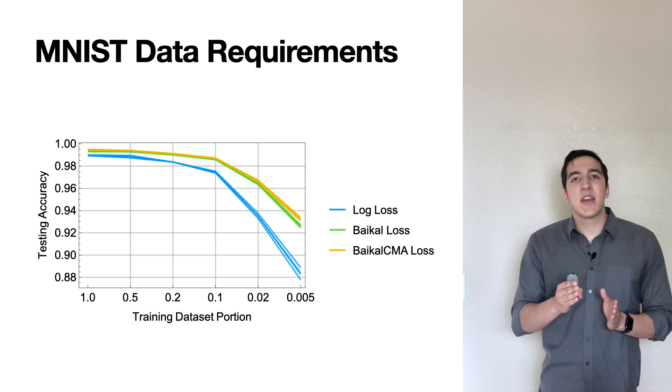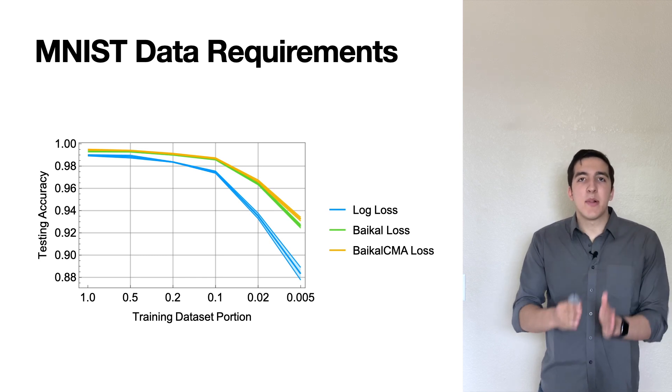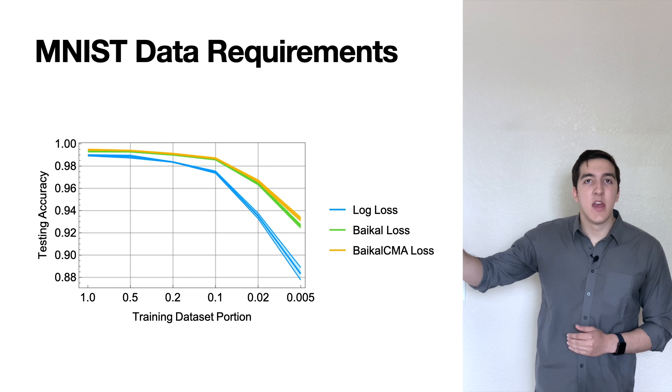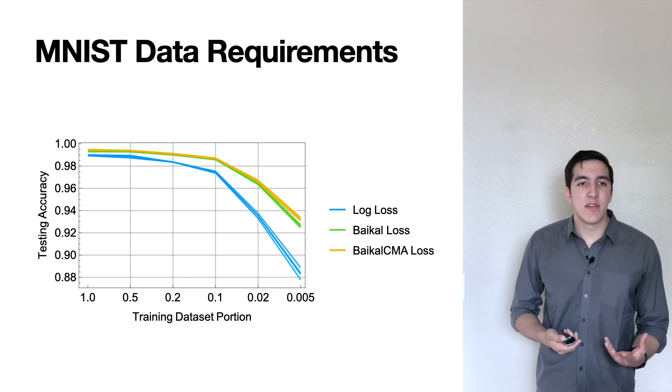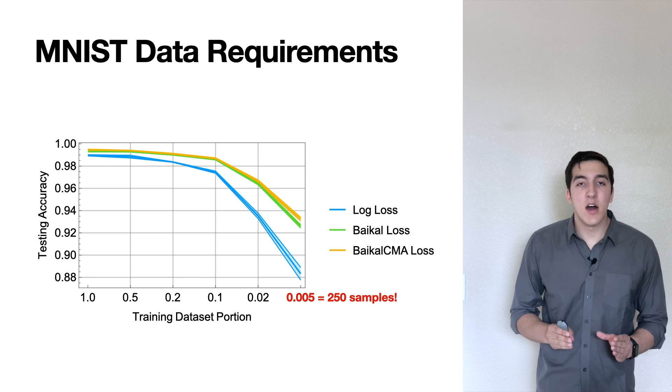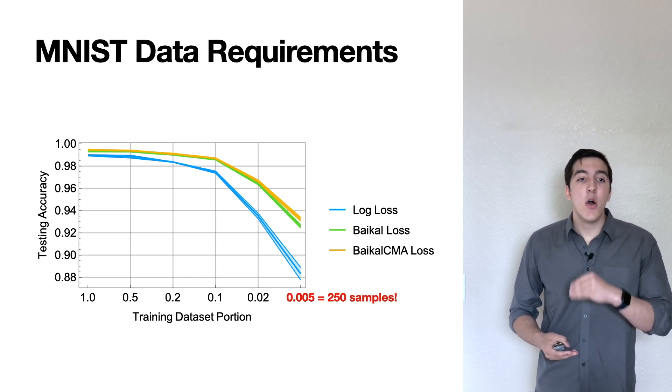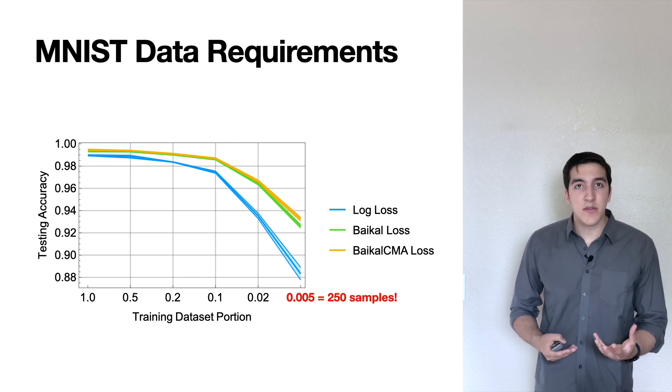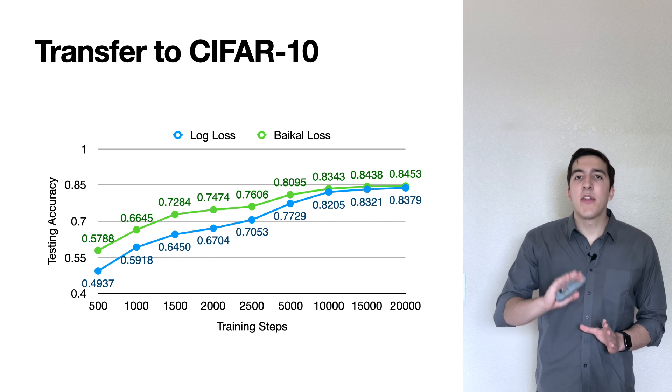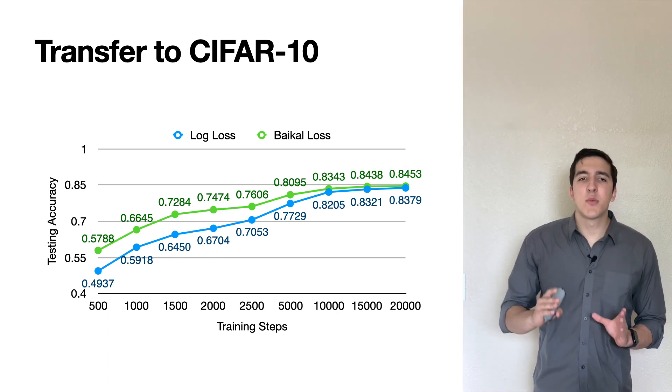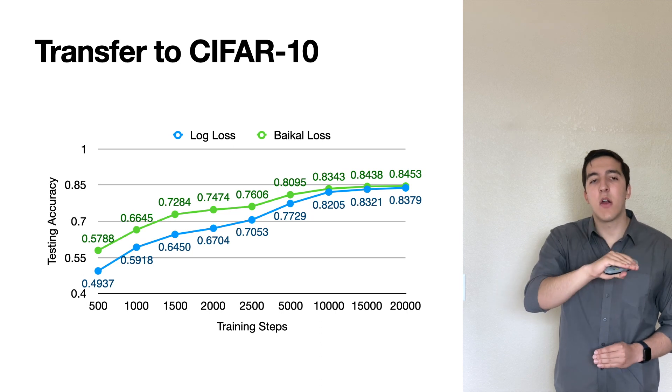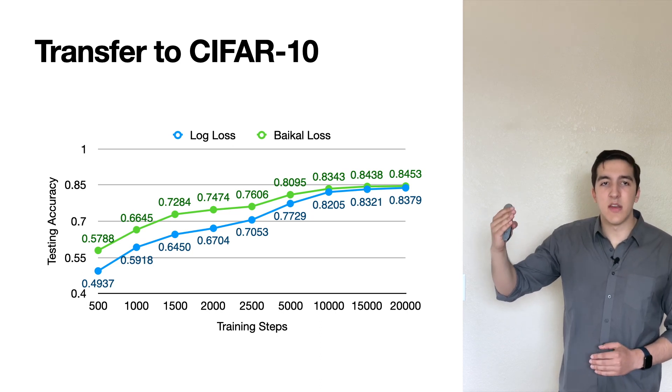When we compare the testing accuracy of these different loss functions on different samplings of the training dataset, we can see that we have a lesser degradation in performance when using Baikal and Baikal CMA than the cross-entropy loss. So you can see on the rightmost column, this is just training with 250 samples of the dataset. This is really impressive. You're able to get over 90 percent accuracy with just 250 samples just by using one of these loss functions. And these loss functions also transfer pretty well to CIFAR 10. While the increase in performance isn't as great, this is a much more complex task of natural image classification with larger images additionally. We can see we have higher levels of performance early on, and as we converge, we still have a roughly one percent increase in testing accuracy. So this is just one of the loss functions that you can get out of GLOW.